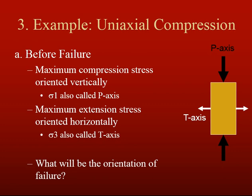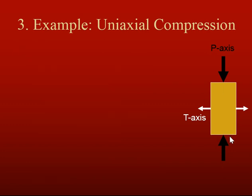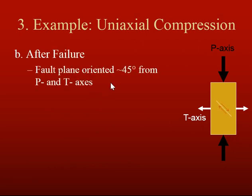The question then is: what will be the orientation of failure? What will happen when this rock gets stressed too much and actually breaks? After failure, the fault planes will be oriented between about 30 and 50 degrees. We normally use 45 degrees as our estimate for the orientation of the failure plane — it'll be 45 degrees from both the p-axis and the t-axis, right? If it's 90 degrees between those two, we've got 45 on either side.